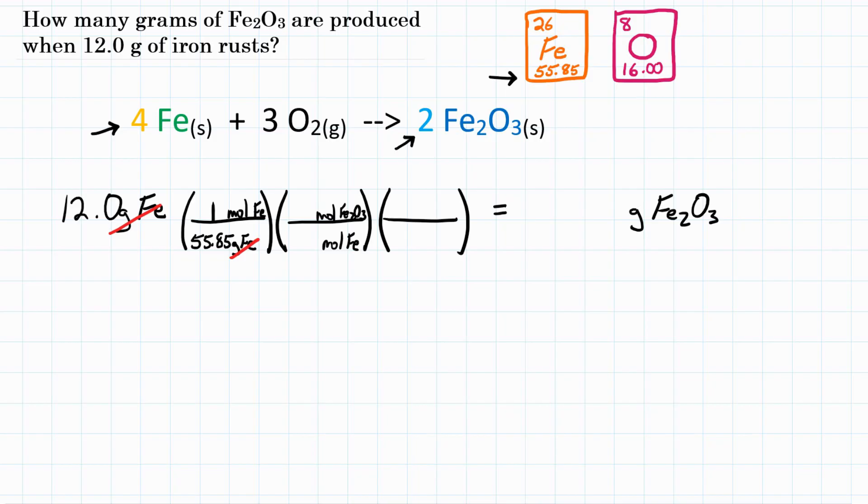So on the bottom, we're going to put four, because that was the coefficient for iron. And on top, we're going to have two, because that's the coefficient for Fe2O3. So at this point, moles of Fe will cancel with moles of Fe. And then our last step, we want to get rid of moles of Fe2O3.